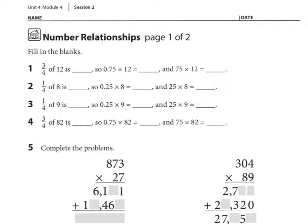So if 1 fourth of 12 equals 3, 3 fourths is 9, because 3 times 3 is 9.